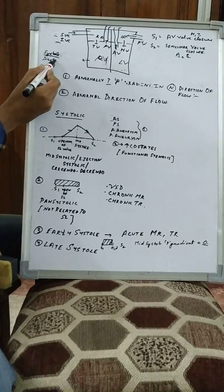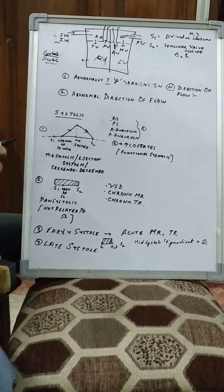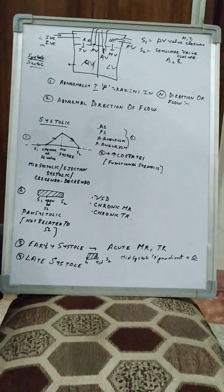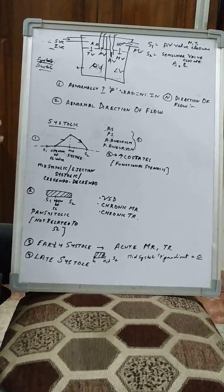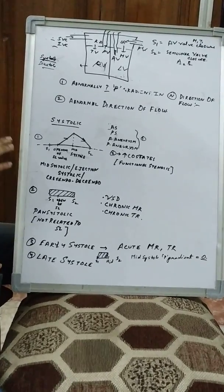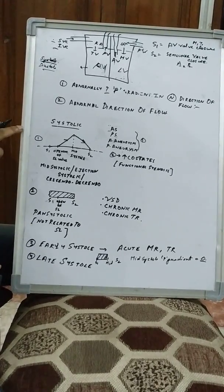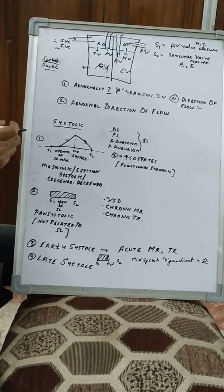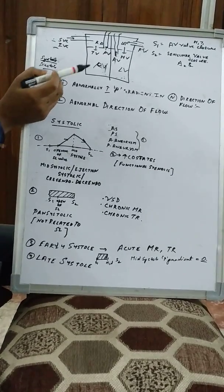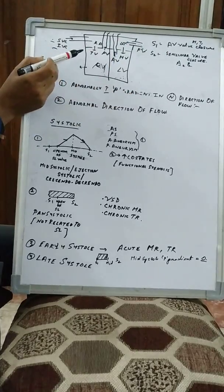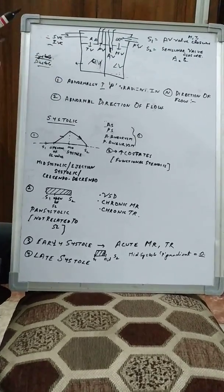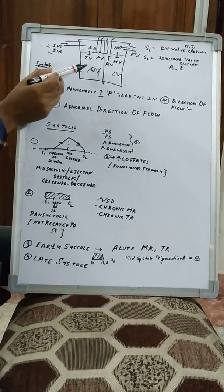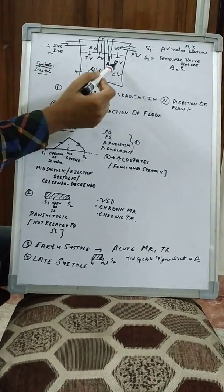To understand the basics of murmur, we should know at least two physiological heart sounds: S1 and S2. There are also S3, which can be physiological or pathological, and S4, which is always pathological. S1 occurs due to closure of AV valves — atrioventricular valves — which are the valves that allow blood to go from atrium to ventricles: the tricuspid valve on the right side and the mitral valve on the left side.